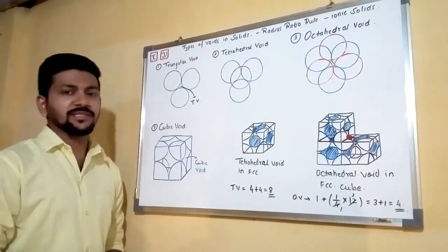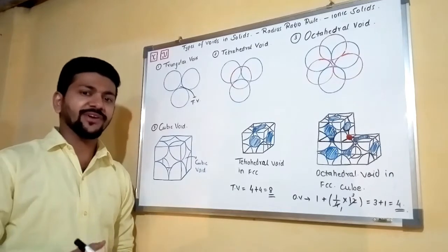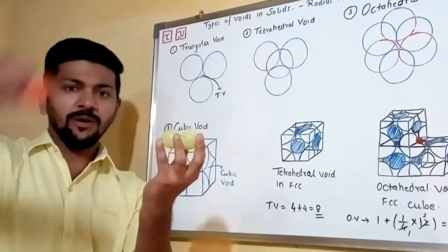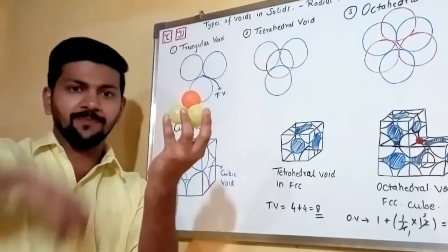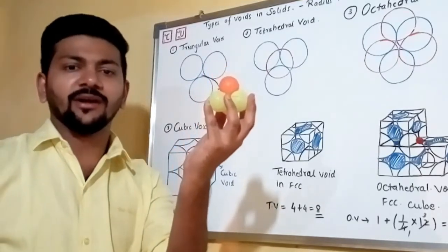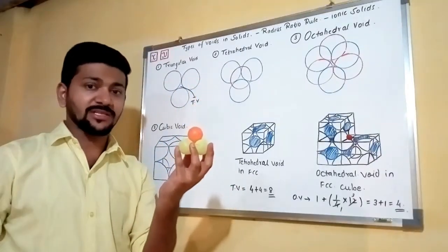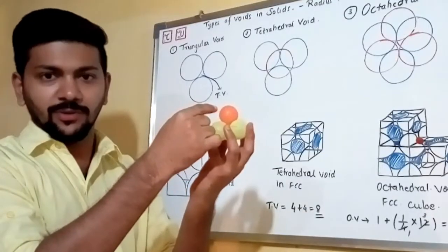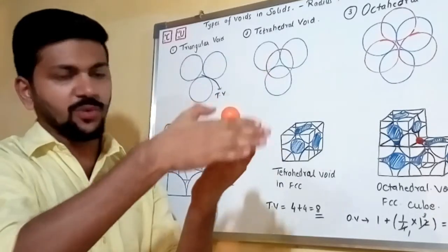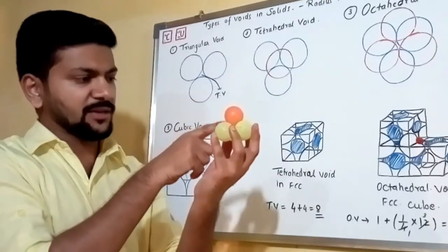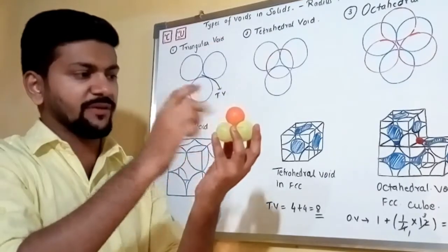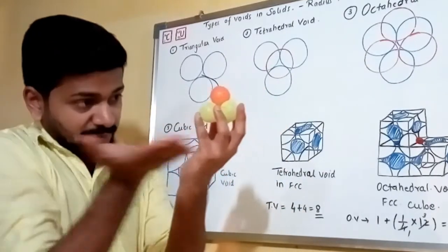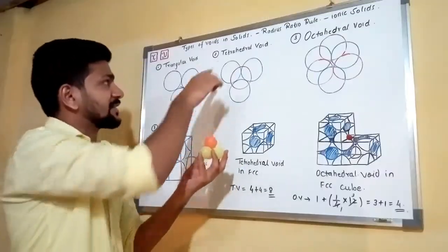The next type is the tetrahedral void. A tetrahedral void is produced when there are three particles with one particle placed over them — the void produced inside is a tetrahedral void. It is called tetrahedral because there are four faces: the centers of three bottom particles form faces, plus the bottom itself forms the fourth face.